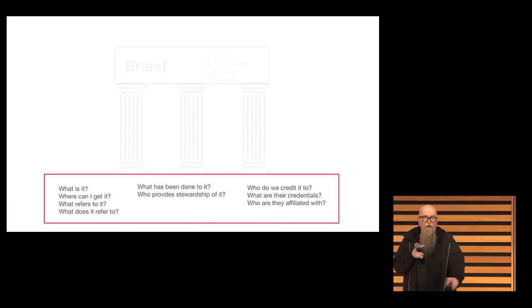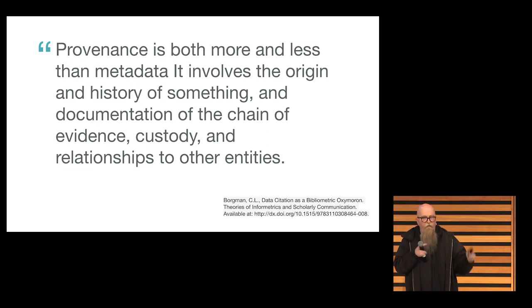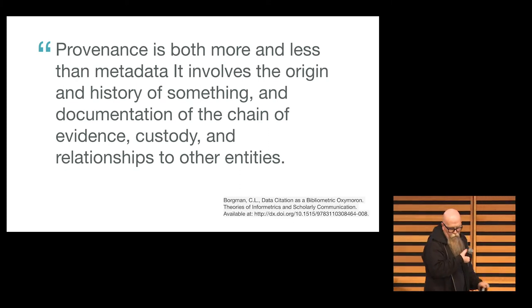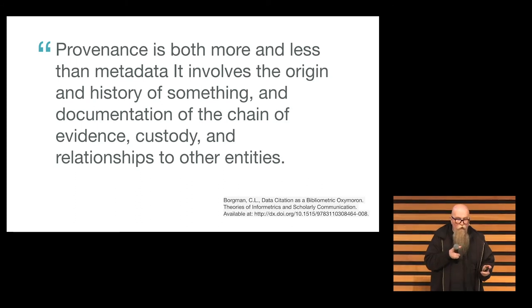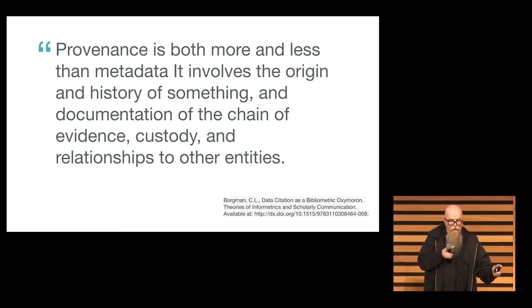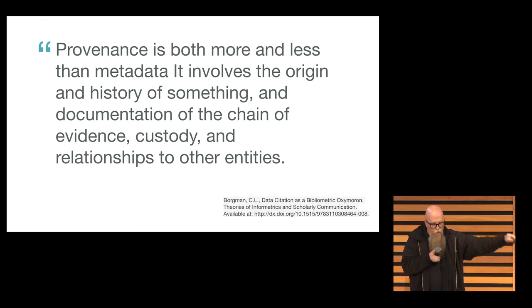So, this foundation is becoming more important. It's stuff that we're going to start looking for and it's going to extend beyond the traditional bibliographic metadata that we've been considering, right? This is a quote from Christine Borgman. Provenance is both more and less than metadata. It involves the origin and history of something, documentation of the chain of evidence, custody, and relationships to other entities. This is something that we use. I'll point out that when I showed you those redacted article images, almost everything that you could identify was a form of metadata. Authors, titles, section heads, references. Metadata has already become an important part and it's going to continue to be an important part of how we demonstrate that we're worthy of trust.